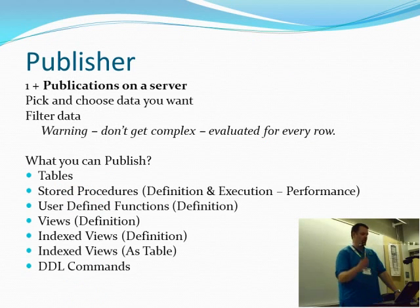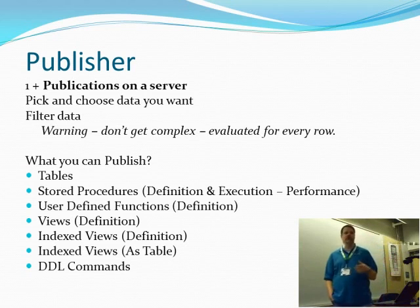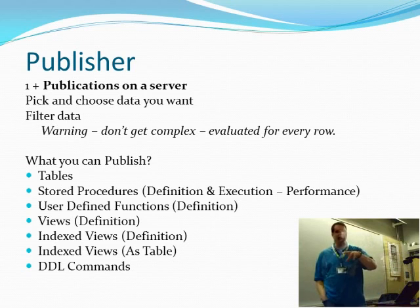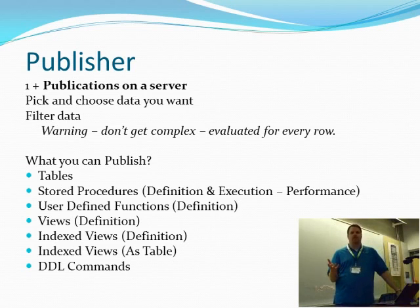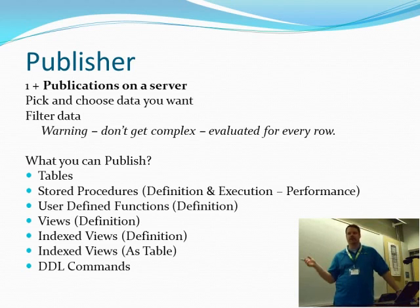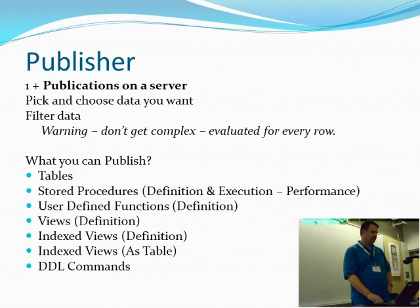Your publisher can have one or more publications on the server, and like I said before, you can pick and choose the data that you want to use. You can also filter the data — so you could say I'm going to create a publication that's dedicated for the northeast environment of my data and have a filter on there that's just for northeast. Or, more realistically, I've got my active data set that I want to replicate, and inactive stuff from years previous — a simple bit flag in your database — I'm going to utilize it to filter out the data going to the destination. The warning I have here is you can't get complex with these filters because they're evaluated for every single row, so you don't want to get too complex.